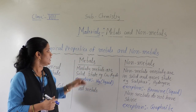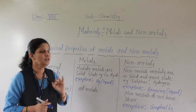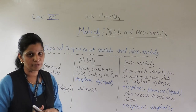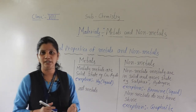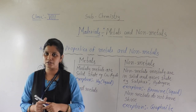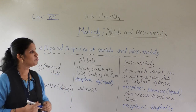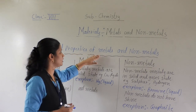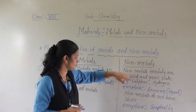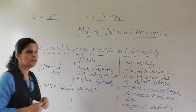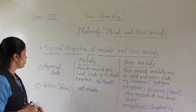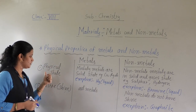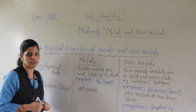Now, what are the physical properties? Chemical properties of metals and non-metals are also there. So, first we will do a detailed study about the physical properties of metals and non-metals. The first physical property we will see is physical state.